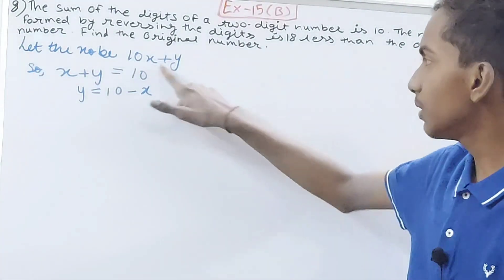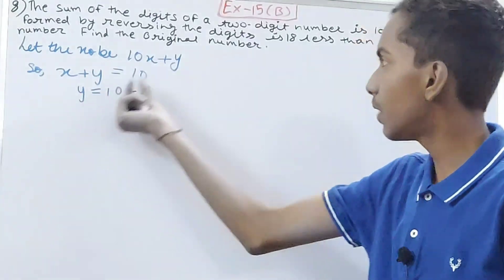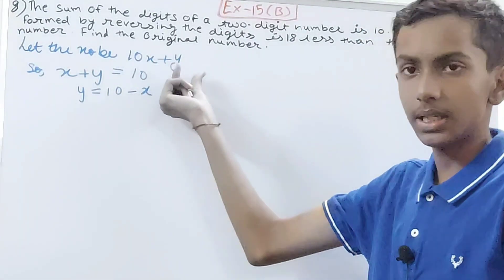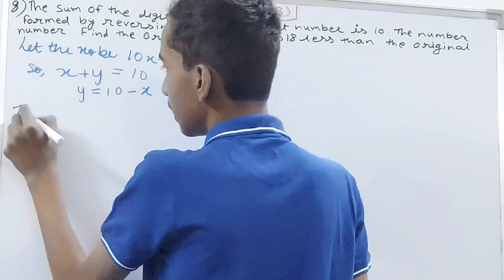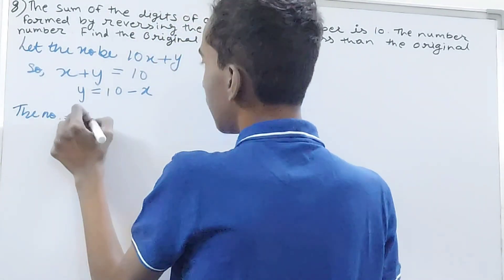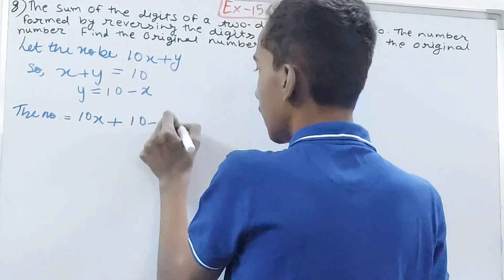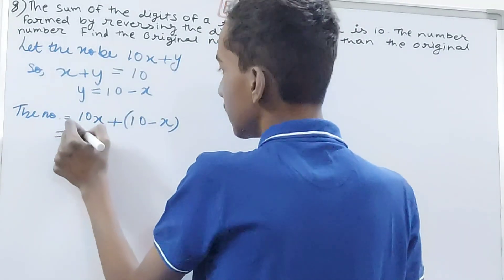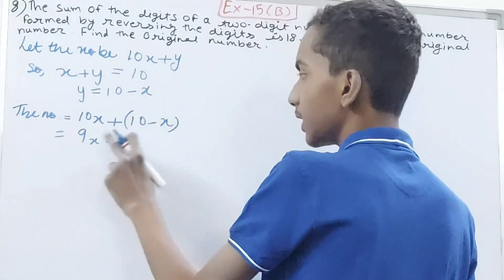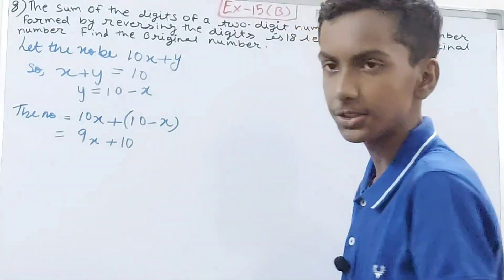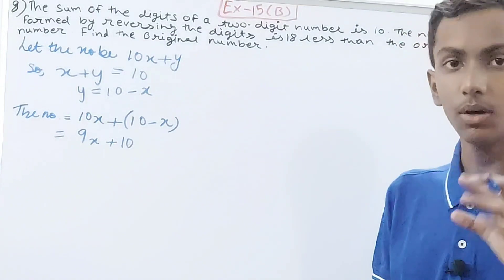So substituting y = 10 − x into 10x + y, the original number becomes 10x + (10 − x) = 9x + 10. So the original number is 9x + 10.